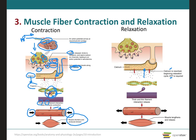Calcium is going to be reuptaken into the T-tubules, and ATP is required to release the myosin head from the myosin binding site on the actin filament. When this occurs, the myosin head gets released, and therefore the muscle is able to stretch back and relax.